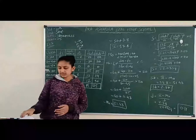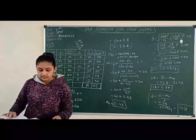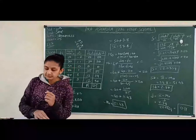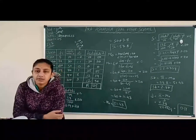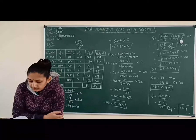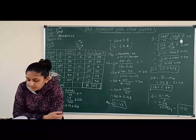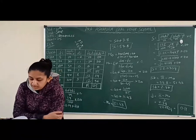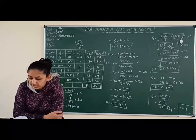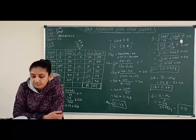Hello students, welcome back. In this video, we are going to solve illustration number 2: Find the skewness and coefficient of skewness by Carl Pearson's method from the following data about annual tax of 100 companies.